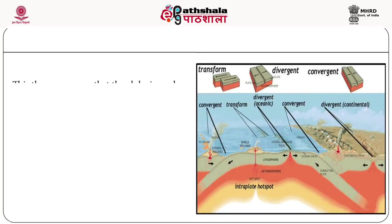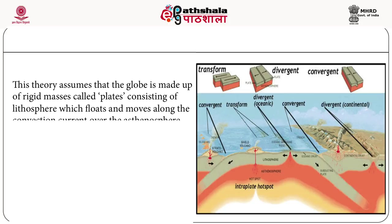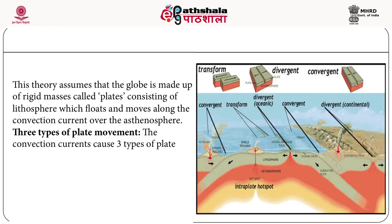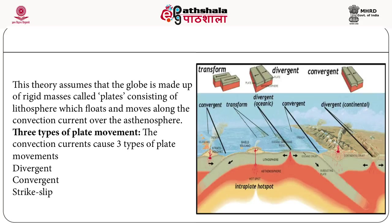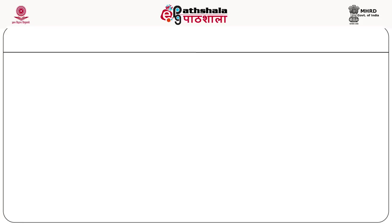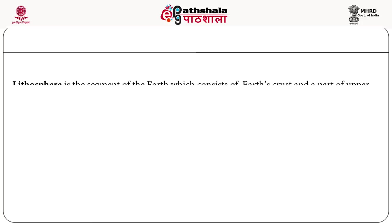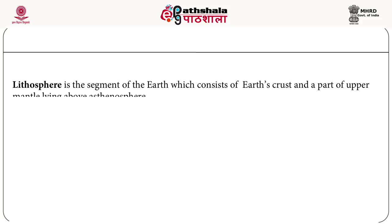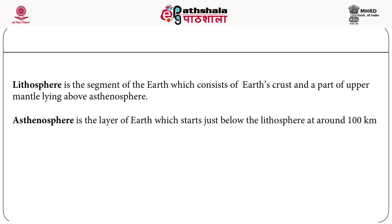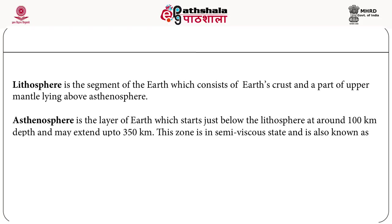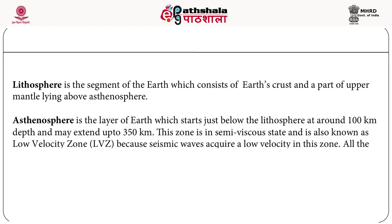Plate tectonics theory assumes that the globe is made up of rigid masses of plates consisting of lithosphere, which float and move along convection currents over the asthenosphere. There are three types of plate movement: divergent, convergent, and strike-slip. Lithosphere is the segment of Earth consisting of the crust and part of the upper mantle lying above the asthenosphere. Asthenosphere is the layer starting just below the lithosphere at around 100 kilometers depth and may extend up to 350 kilometers. This zone is in a semi-viscous state and is also known as the low-velocity zone, as seismic waves acquire low velocity here.